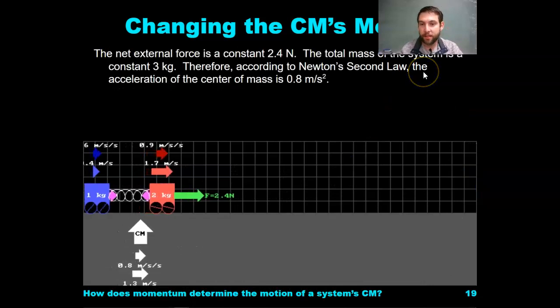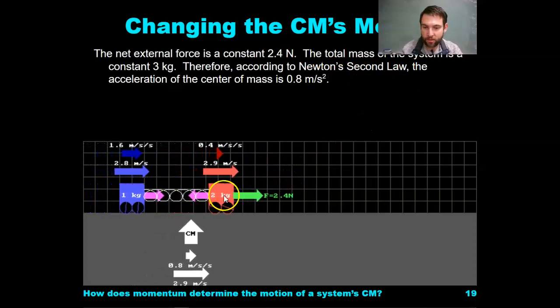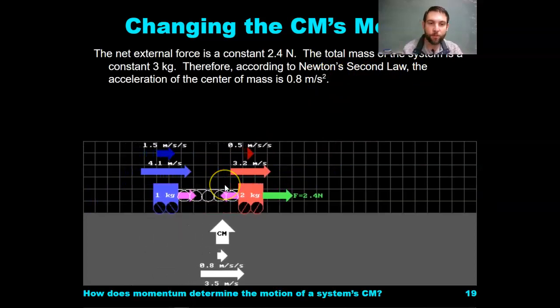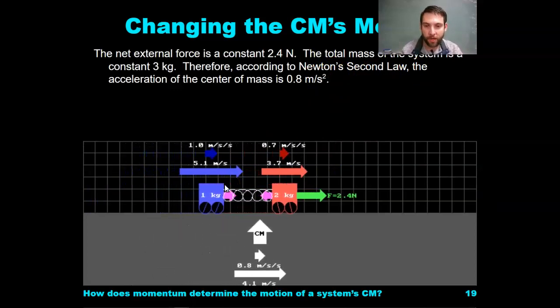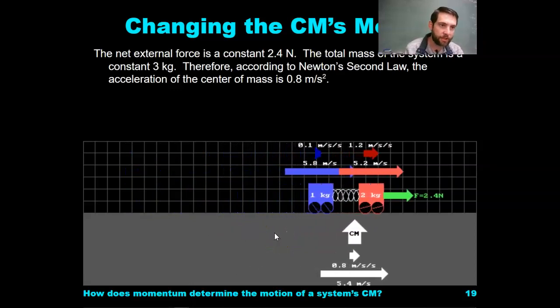The net external force is a constant 2.4 newtons. The total mass of the system is 3 kilograms. Therefore, according to Newton's second law, the acceleration of the center of mass is 0.8 meters per second squared.